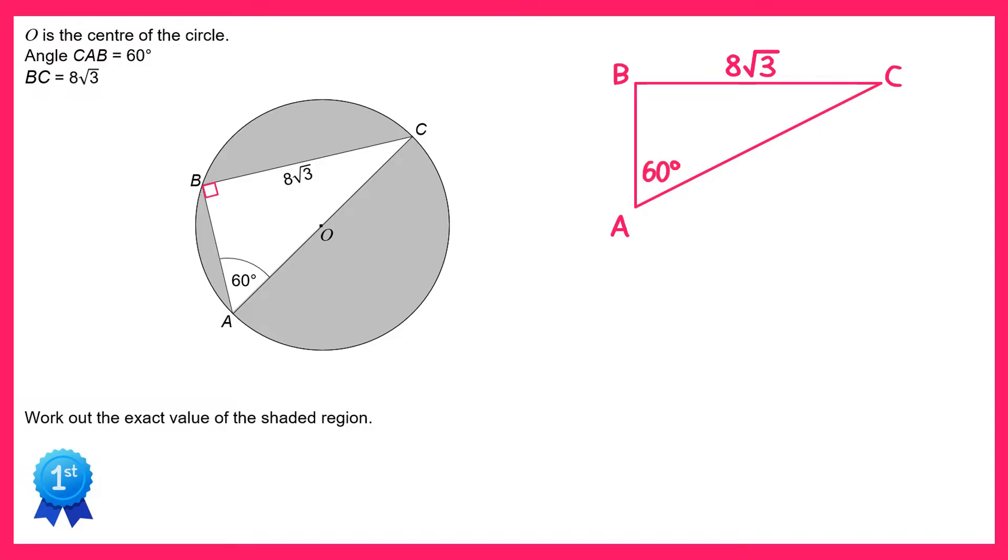We can use SOHCAHTOA to find some of the missing sides here, so let's label the triangle. AC is the hypotenuse, BC is the opposite and AB is the adjacent.